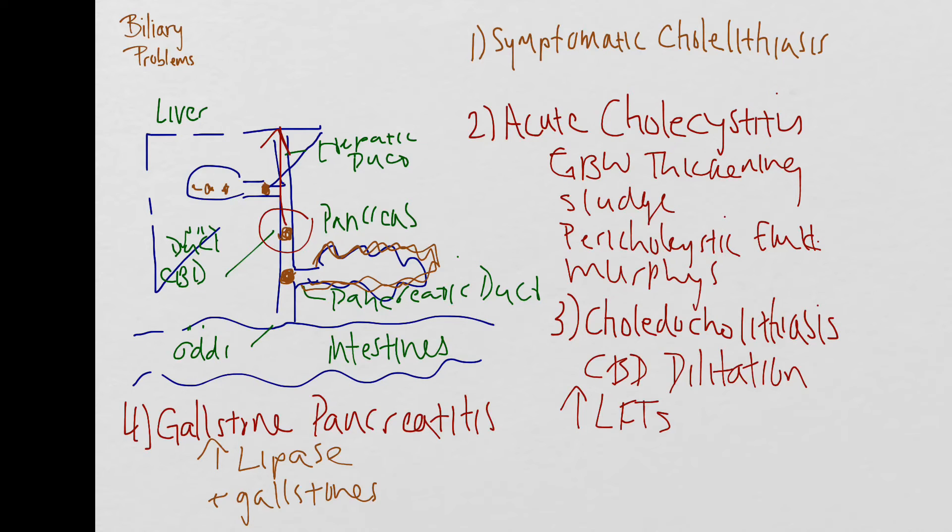For symptomatic cholelithiasis, this is the patient that has gallstones that intermittently get stuck at the neck of the gallbladder and cause pain, but they don't have any evidence of acute infection or anything to suggest acute cholecystitis, choledocholithiasis, or gallstone pancreatitis. These patients you can treat symptomatically and try to get adequate pain control. If you can get their pain under control and they can tolerate PO, you can refer them for outpatient surgery.